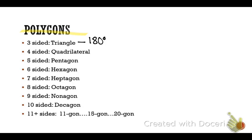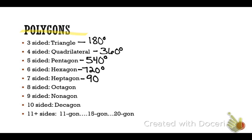For a quadrilateral, the sum of all the angles is 360. For every additional side, I'm adding 180 degrees to the previous one. So pentagon is 540, hexagon is 720, heptagon is 900, octagon is 1080, nonagon is 1260. We'll stop there.